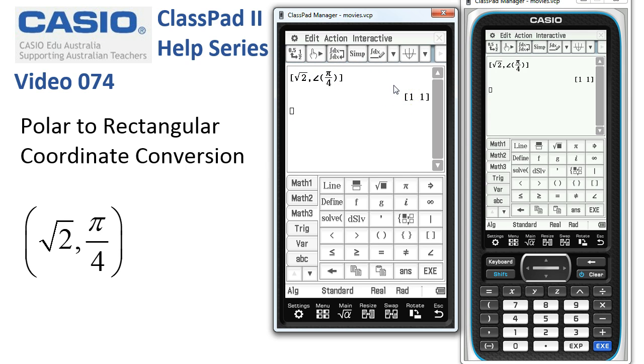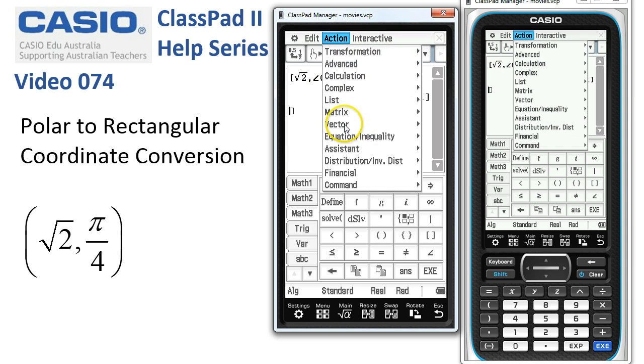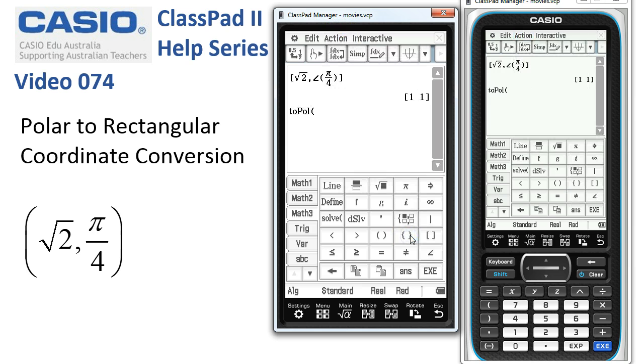Now if we want to convert this back into its polar form, here we go, action, vector, two polar form. And when I tap execute, there it is, it's converted it straight back.